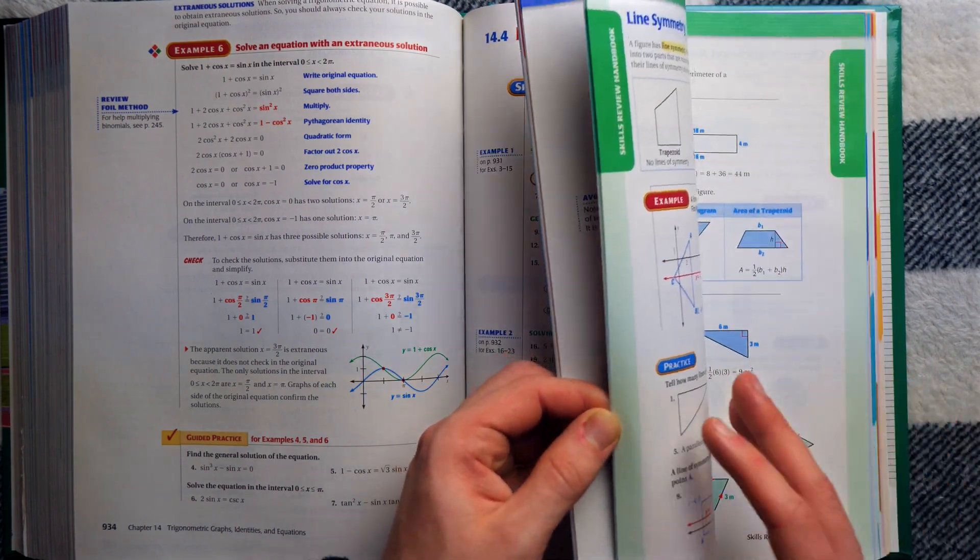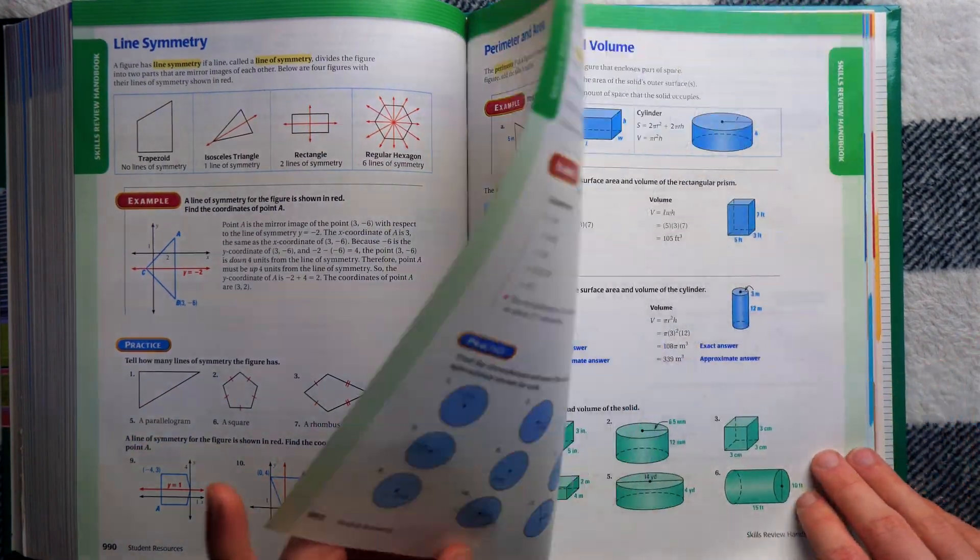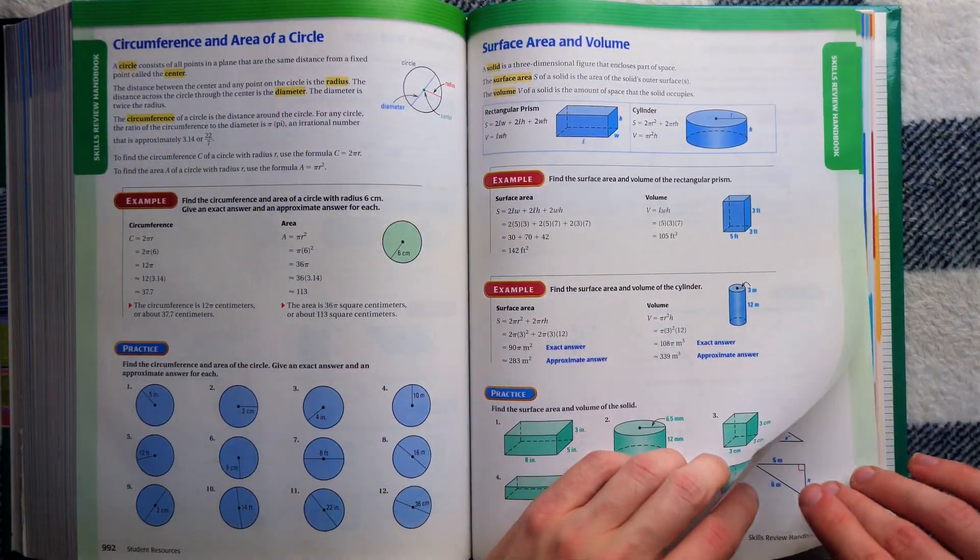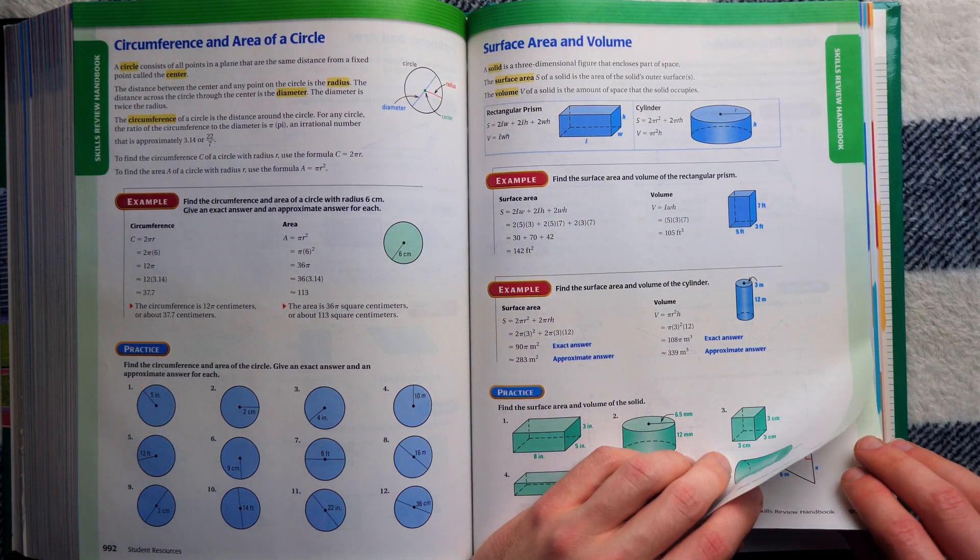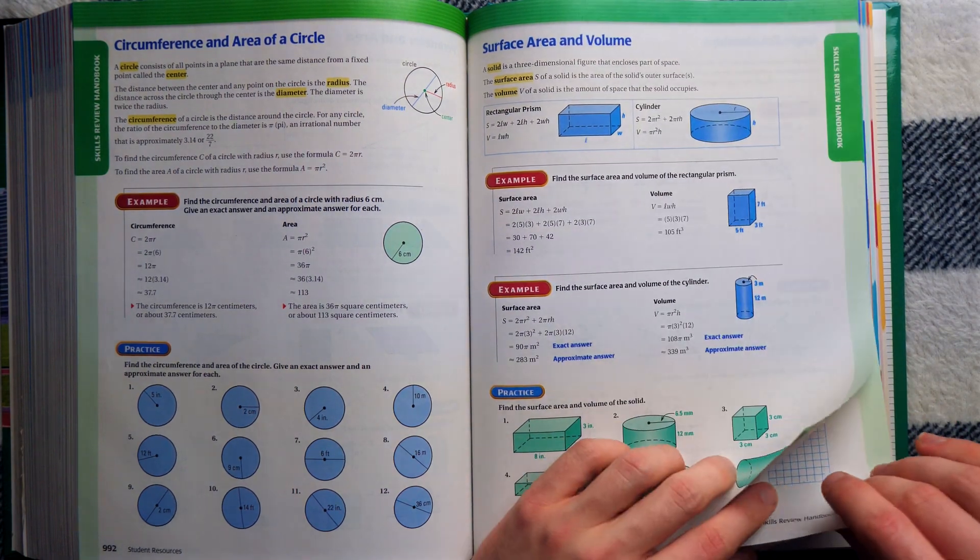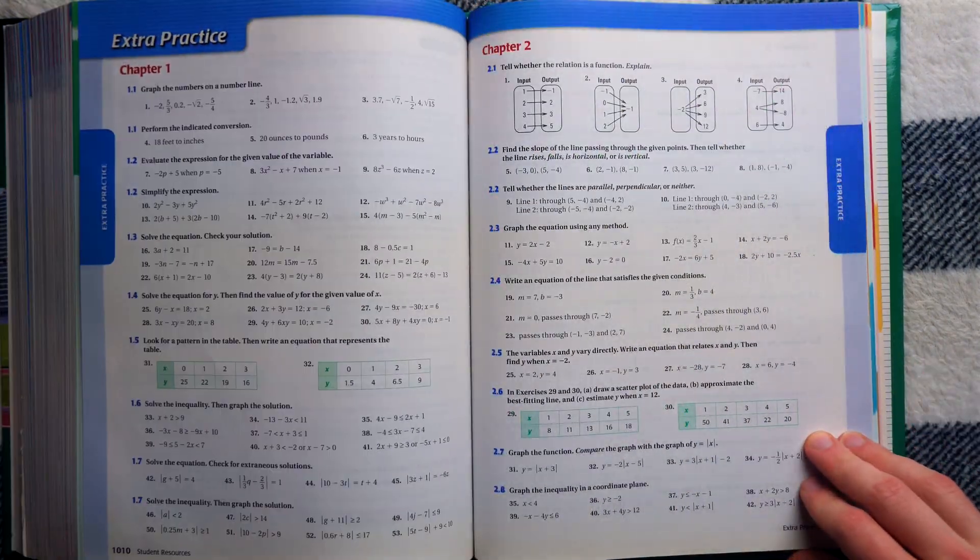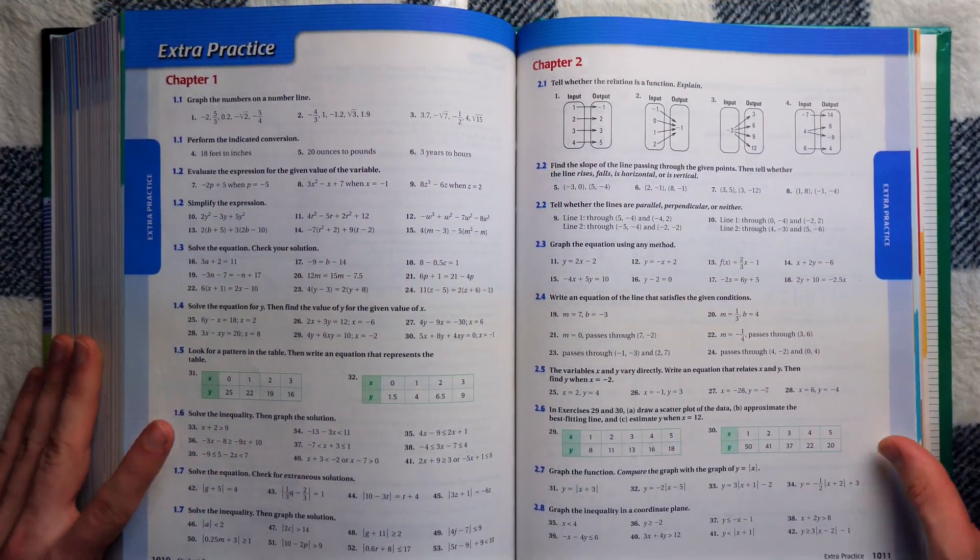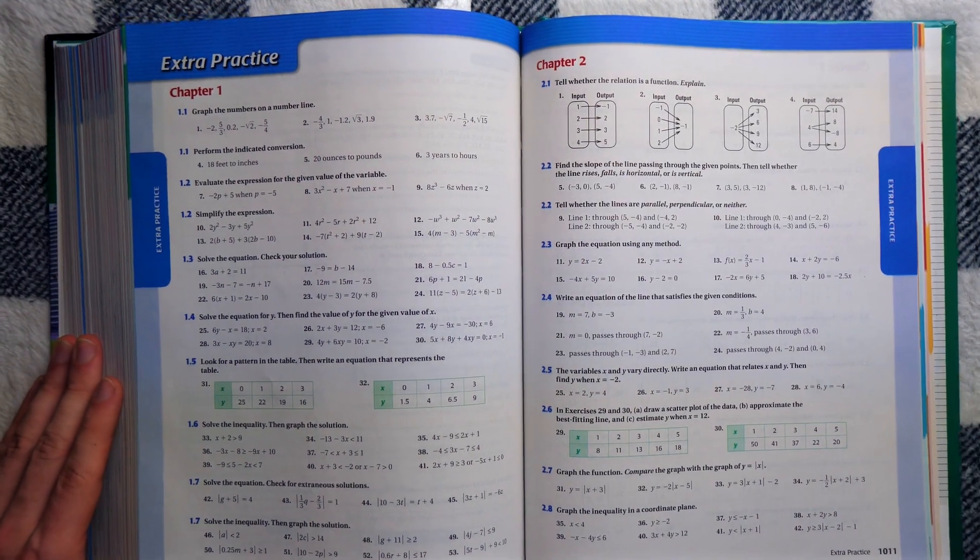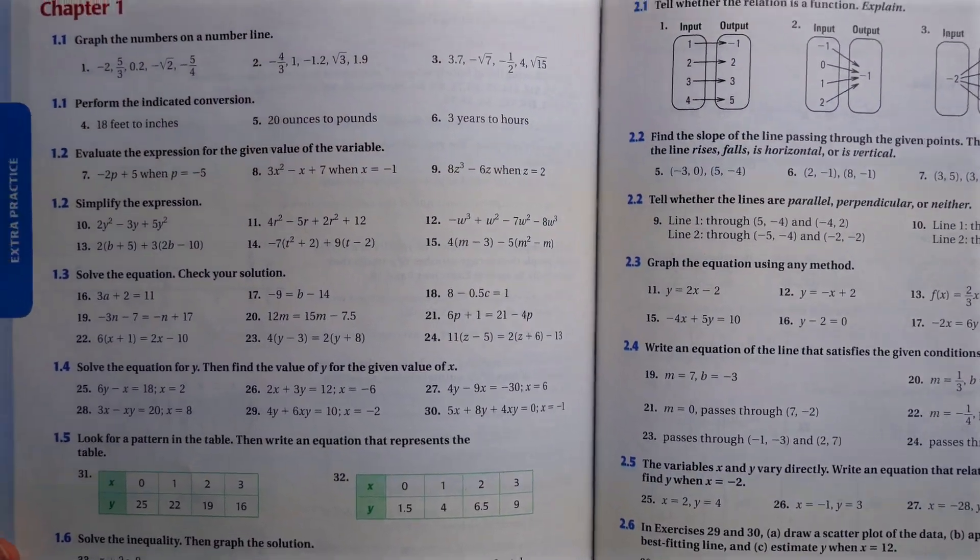We got the skills review handbook again, right? Skills review handbook. Go over everything. Some more examples, more exercises. You think it's to wrap up? It's not to wrap up. This isn't to wrap up. This is to prepare you for New Game Plus. Bam! Look at that. Extra practice. You want more practice? Here's a thousand more problems. How's that sound?